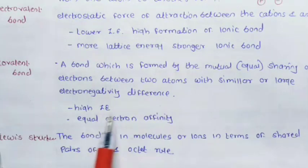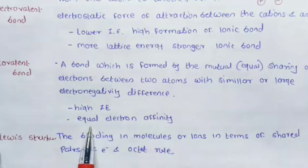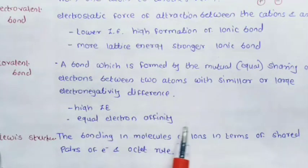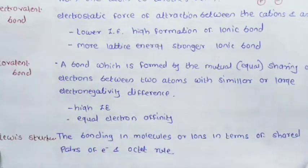If the molecule has high ionization enthalpy and equal electron affinity, it is called a covalent bond.